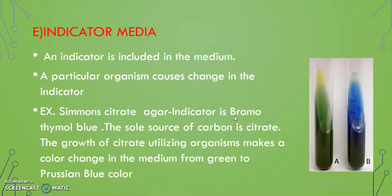Indicator media: an indicator is included in the medium, and a particular organism causes a change in the indicator. Example is Simmons citrate agar — bromothymol blue is added, the sole source of carbon is citrate, and the growth of citrate-utilizing organisms causes a color change in the medium from green to Prussian blue.